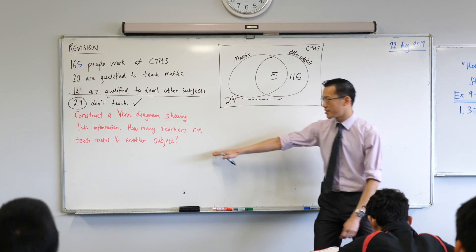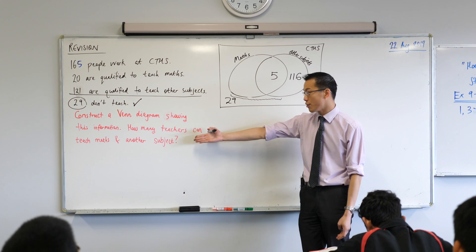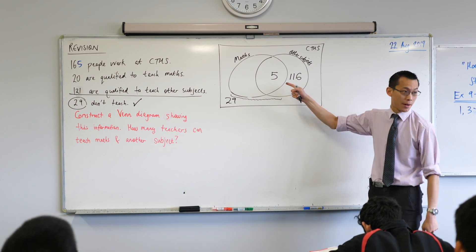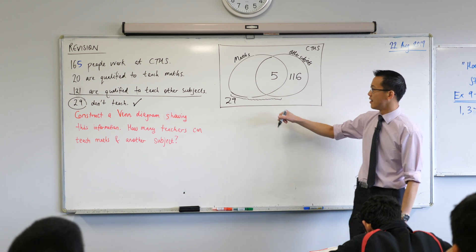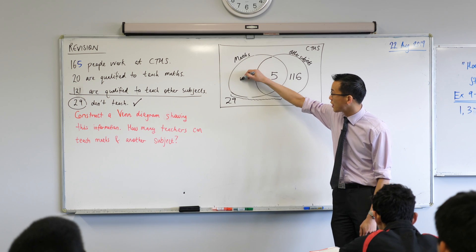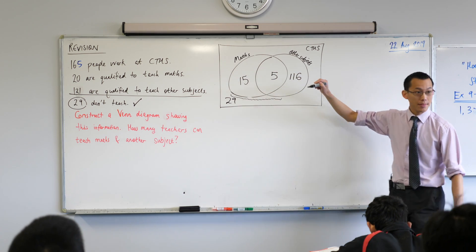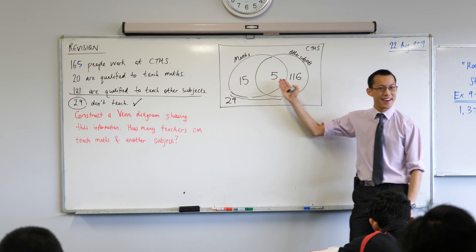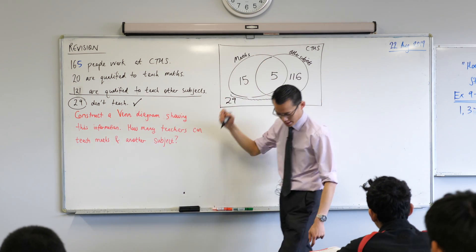Now at this point I've actually answered this second question. I know how many teachers can teach maths and another subject. It's that number. I just want to finish off the diagram. What's the final number? Where'd you get 15 from? 20 minus 5. We know there should be 20 people in here. We already counted five of them. There's the 15 leftovers.